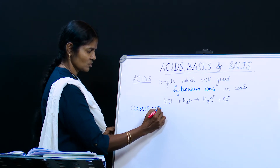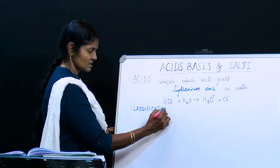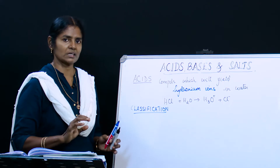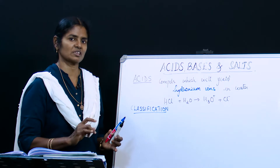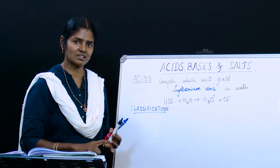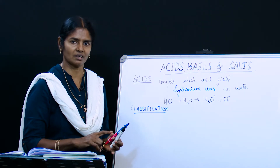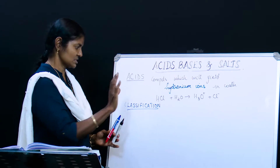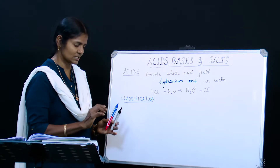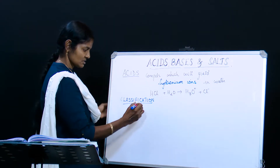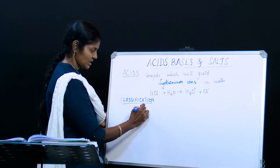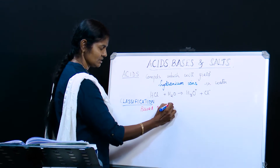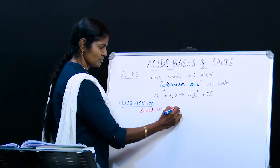That's the definition of acids. Now let's move on to the classification of acids. This classification can be based on so many things — just as when you come to school you can classify yourself based on your classes, sections, height, or houses, there are various kinds of classification. Similarly, for acids, the first classification is based on origin.